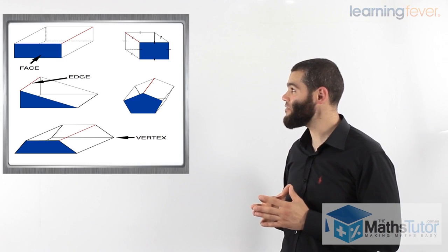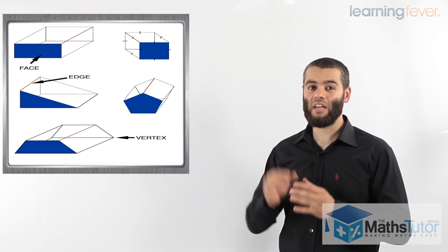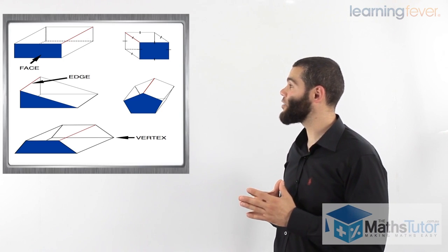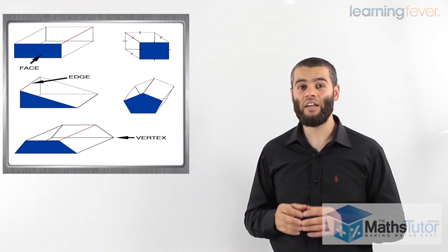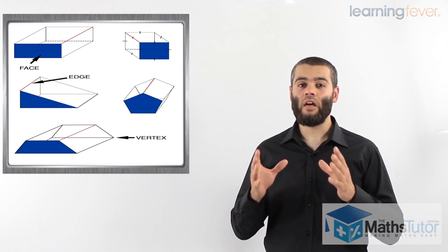Now, these also have what we call edges. Edges are the edge, as the name suggests, marked in red there for you to see and identify the edge of these prisms.